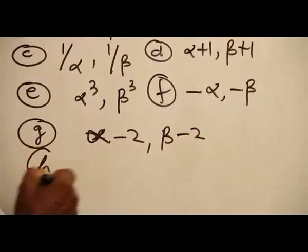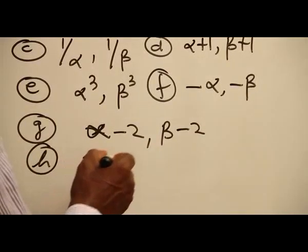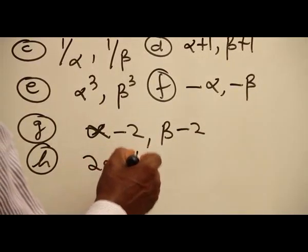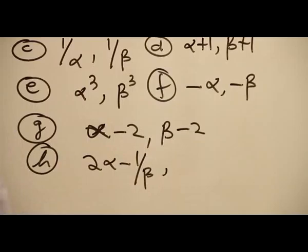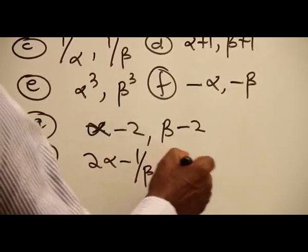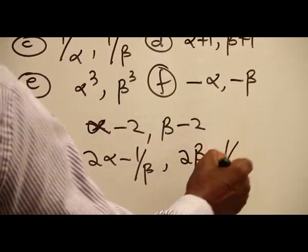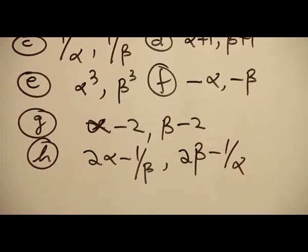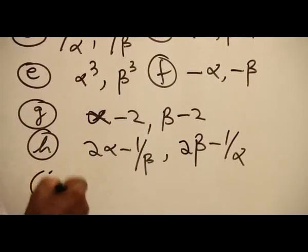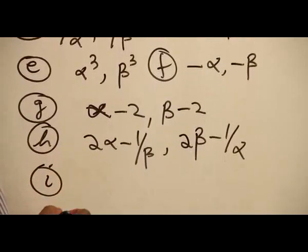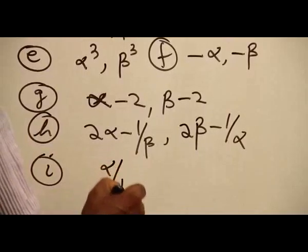H. 2 alpha minus 1 over beta, and 2 beta minus 1 over alpha. I. Alpha over beta.